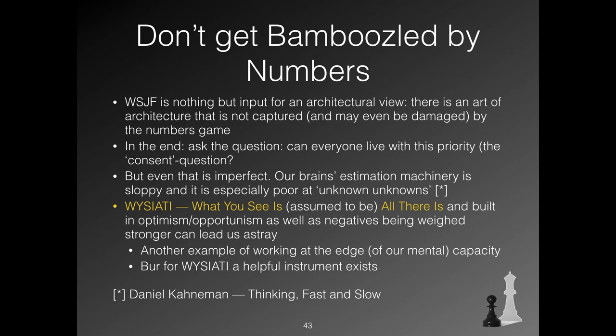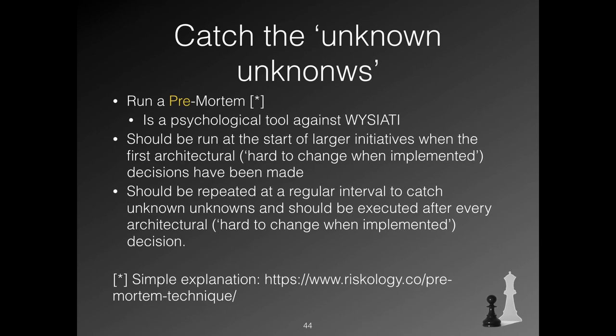But there is a simple instrument that can help — it's called the pre-mortem. We all know what a post-mortem is: some project has gone horribly wrong and we sit together and analyze why. A pre-mortem is a virtual post-mortem. You take a few hours with key players and you imagine how your project can go wrong — you imagine yourself two to three years from now and say: the initiative has failed miserably, what went wrong? It puts your brain into system two, looking for unknown unknowns. Out of that come risks and things you have overlooked, and these you have to manage. It is a good idea to run a pre-mortem every time you make an architectural decision about something that will be very hard to change when implemented.